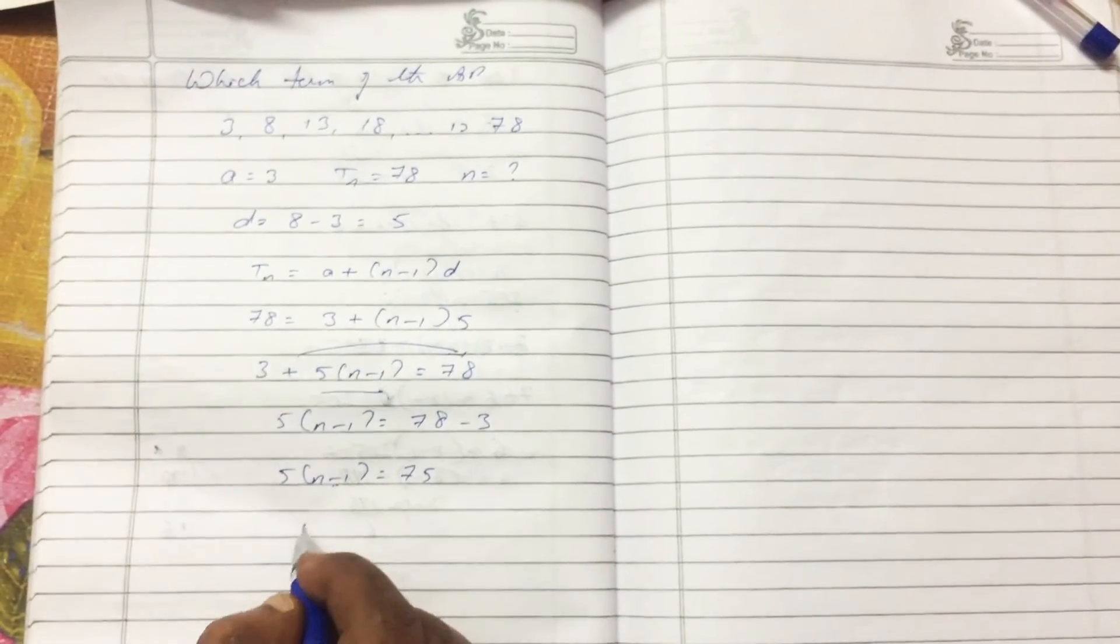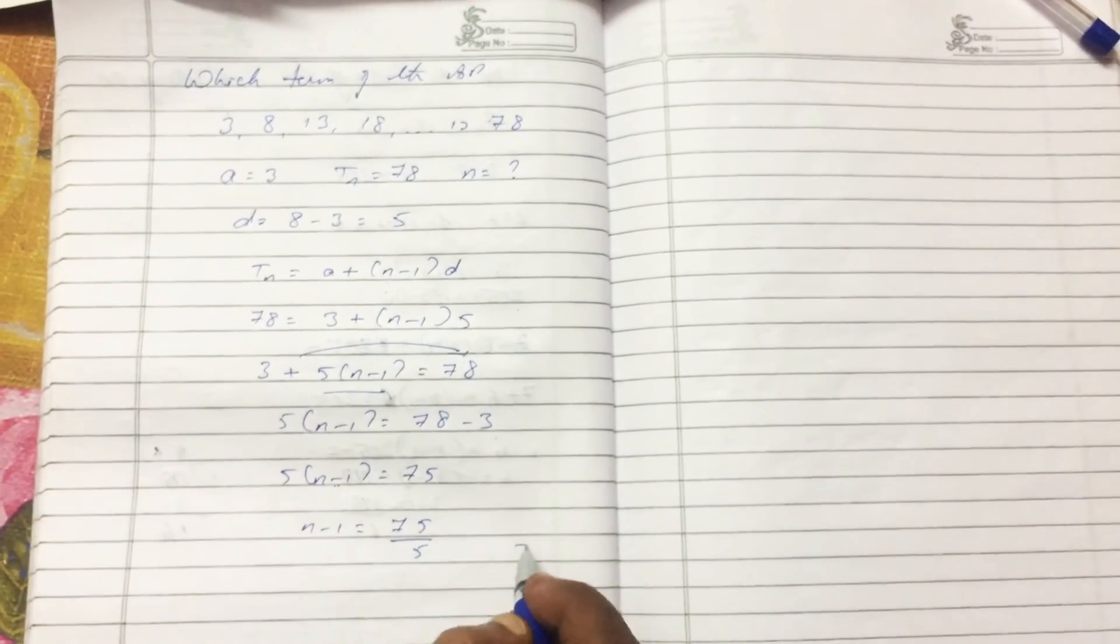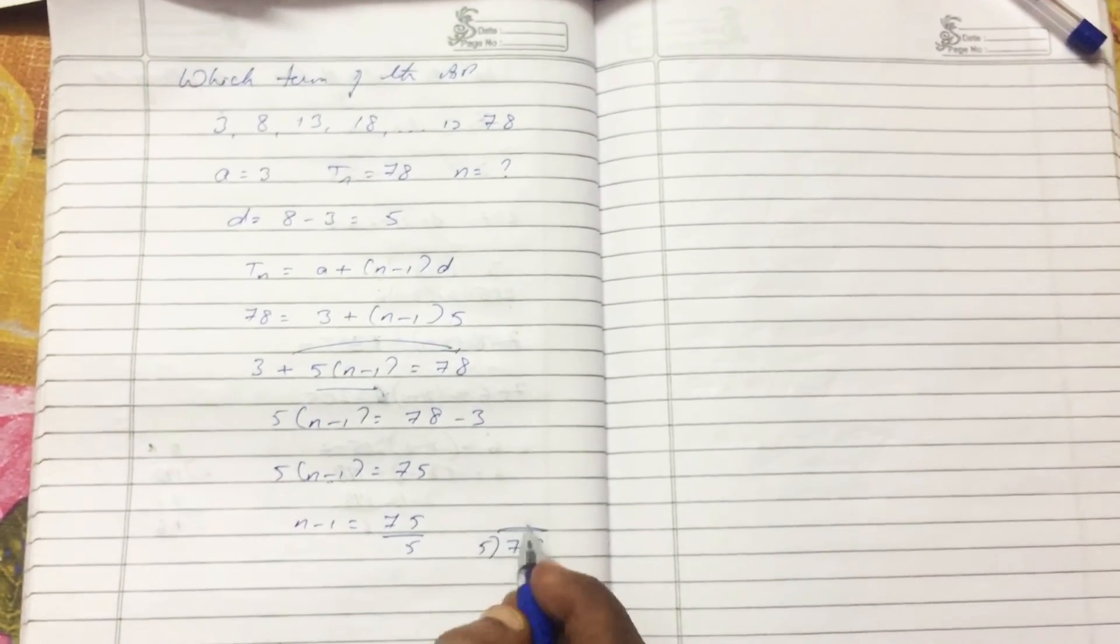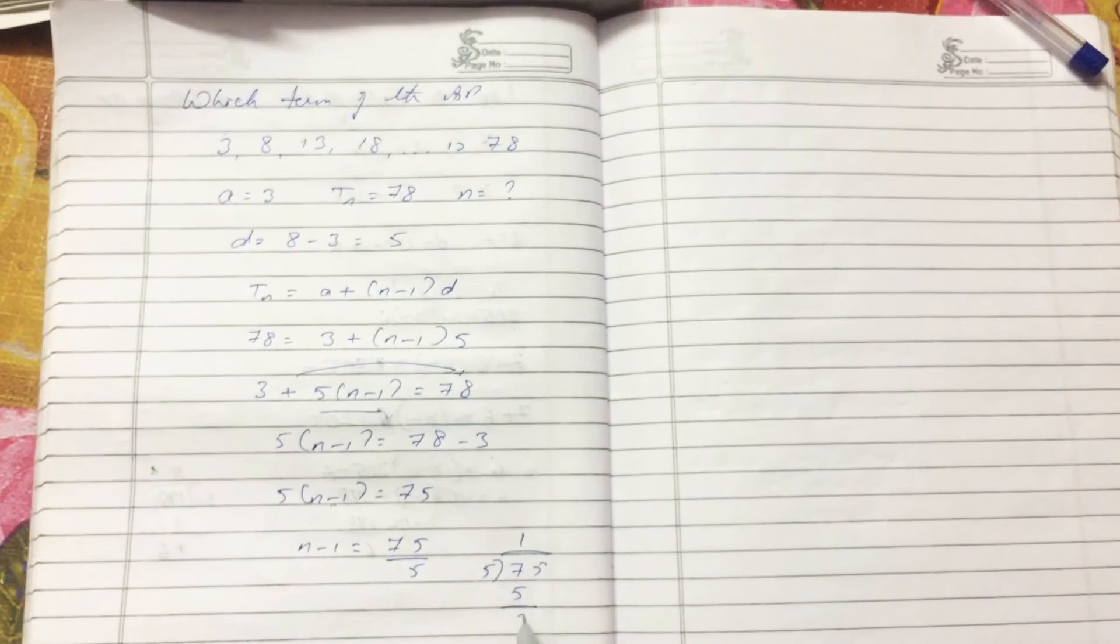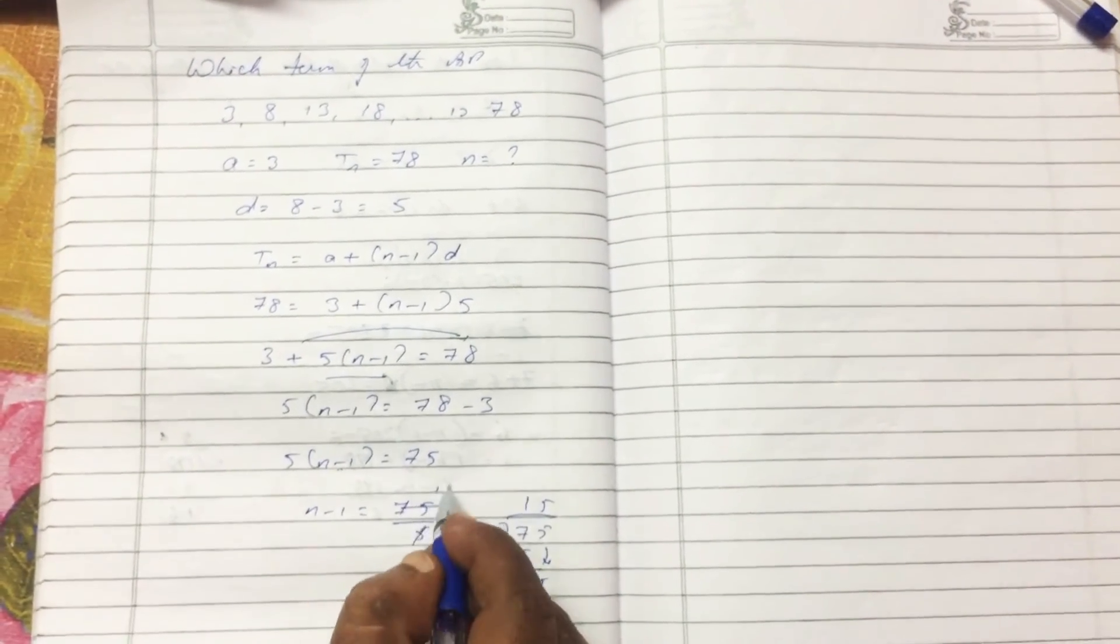So N minus 1 equals 75 divided by 5. 5 into 75: 5 times 1 is 5, drop it down, 5 times 5 is 25... equals 15.